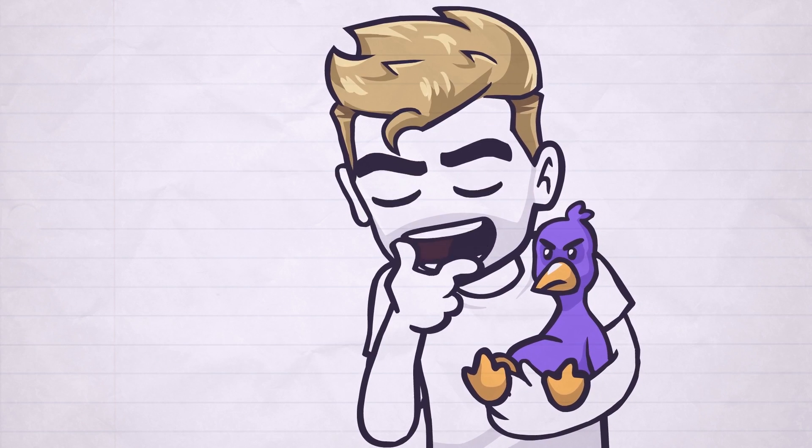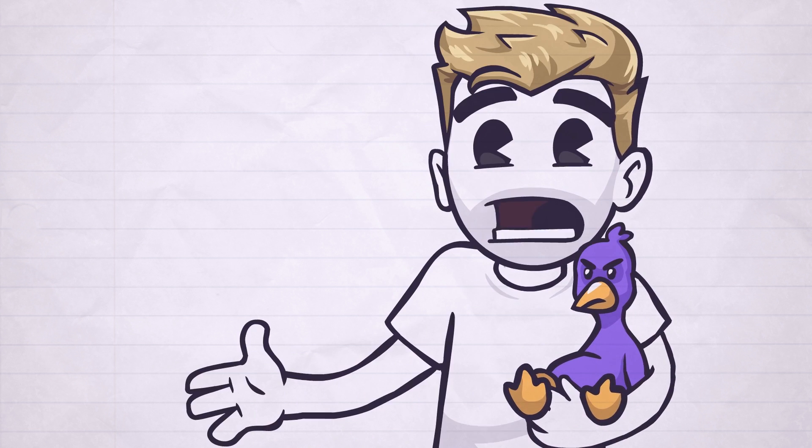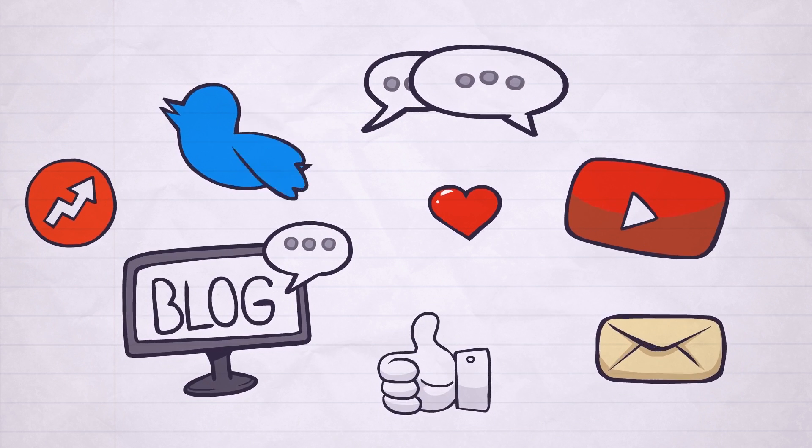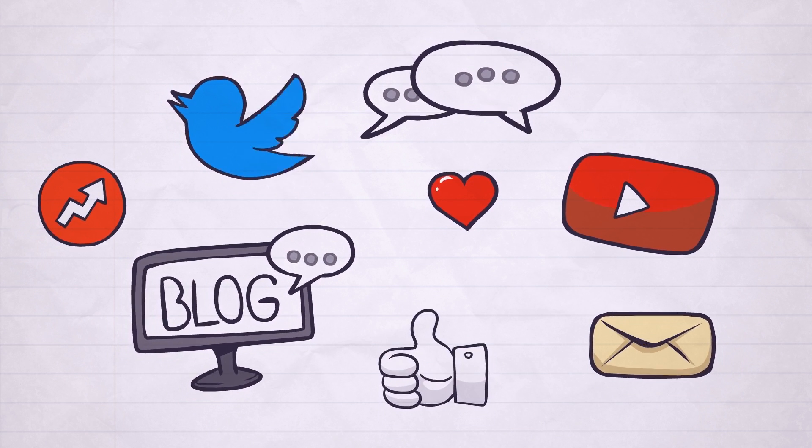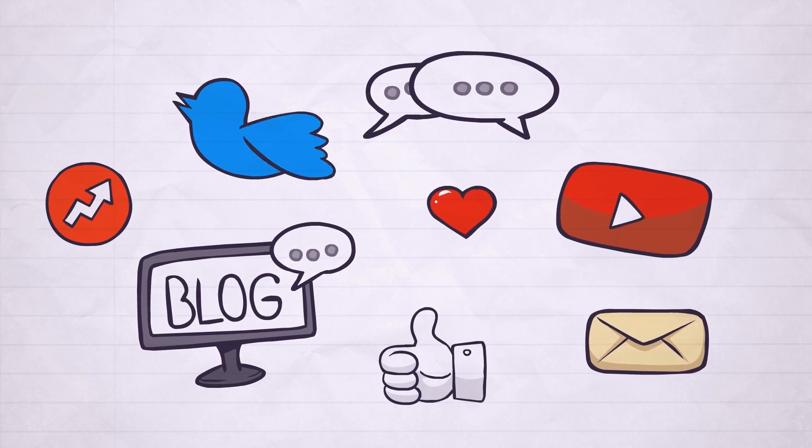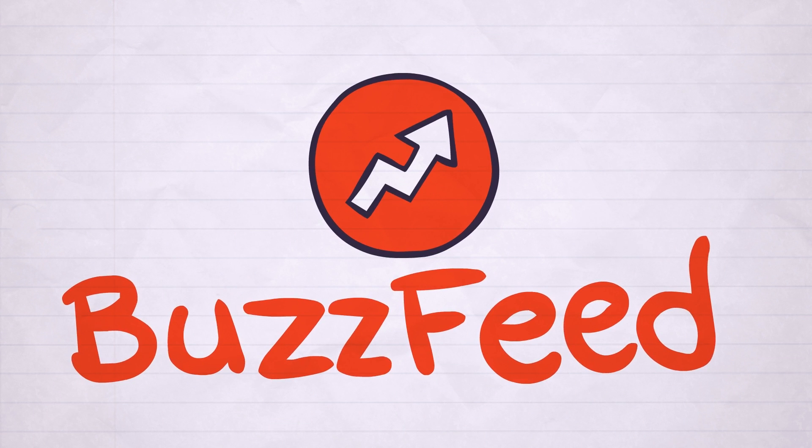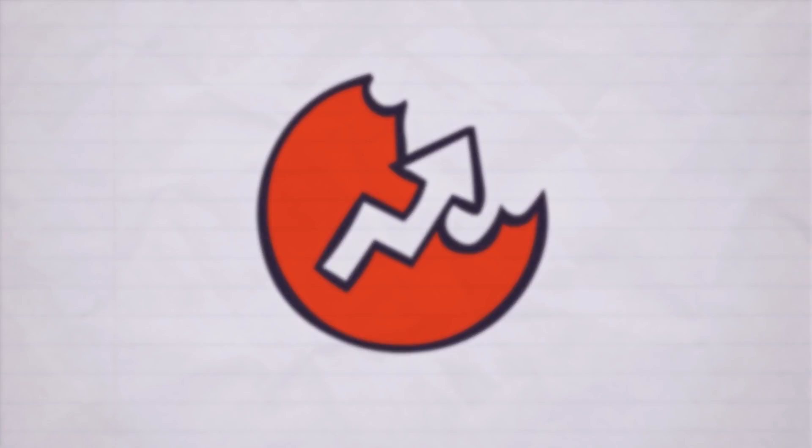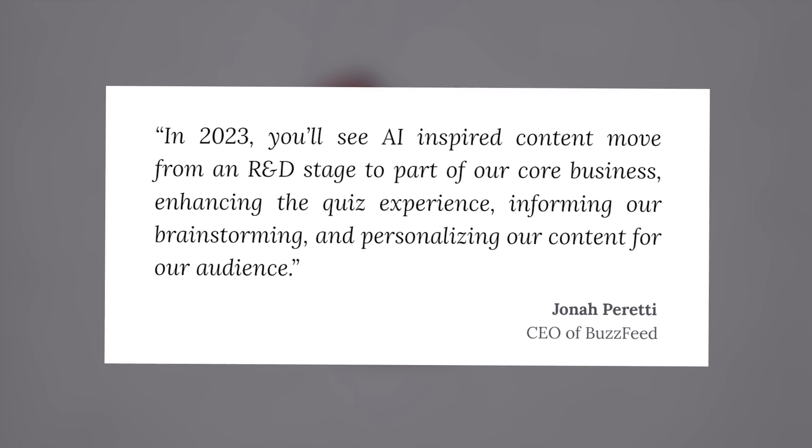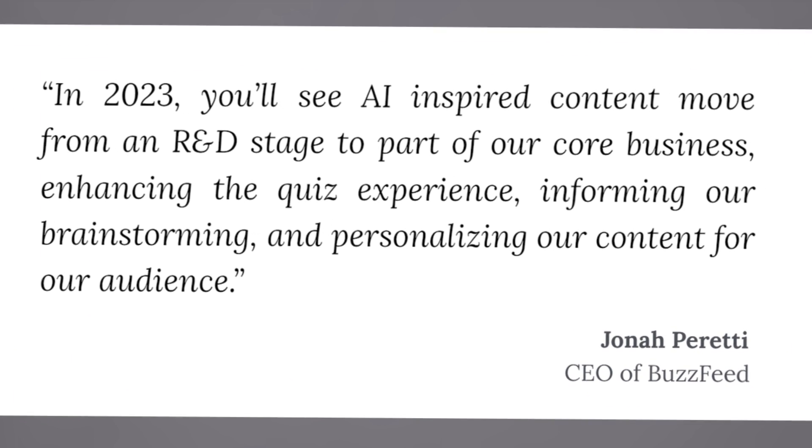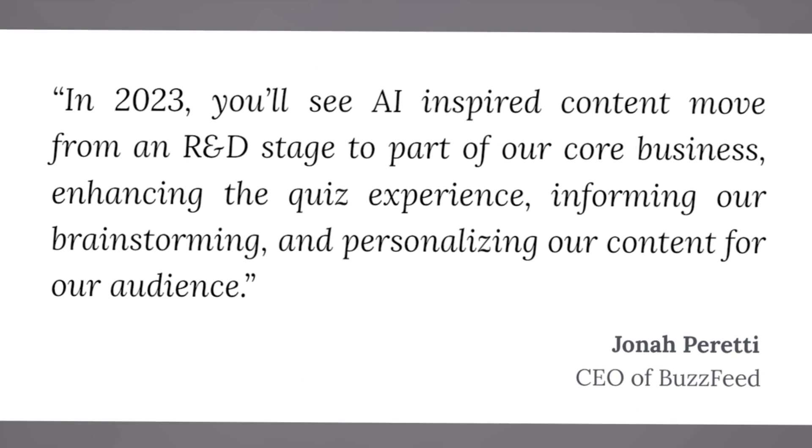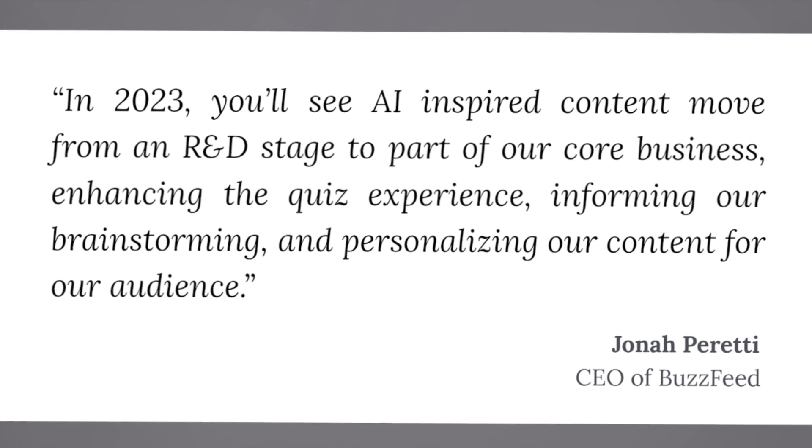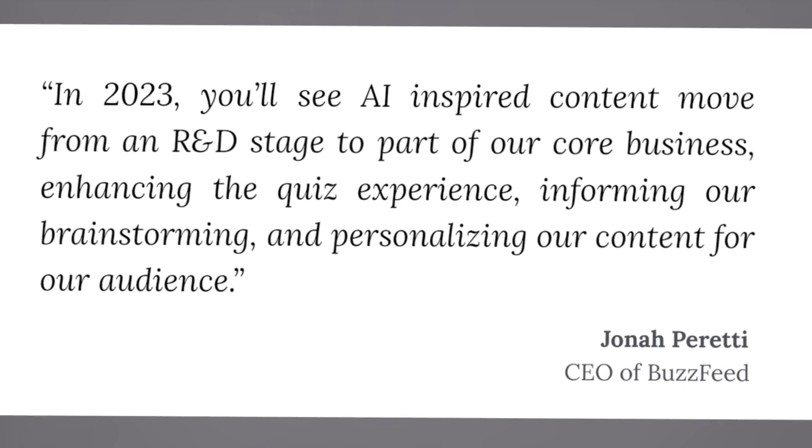Now, in the same way AI has impacted education, another industry where this tool is already making ripple effects is entertainment. Among companies that publish content online, whether it be on blogs, YouTube channels, even Twitter accounts, we can already see a rush to arms by those who see the potential. For example, BuzzFeed has laid off about 180 people, roughly 12% of their total workforce. Their CEO, Jonah Peretti has come out and said that, in 2023, you'll see AI-inspired content move from a research and development stage to part of our core business, enhancing the quiz experience, informing our brainstorming and personalizing our content for our audience.